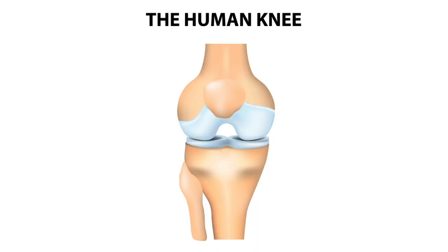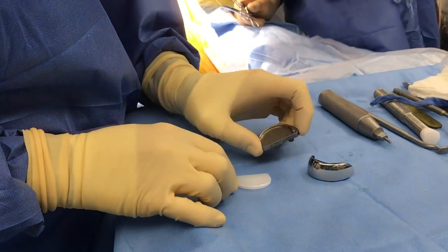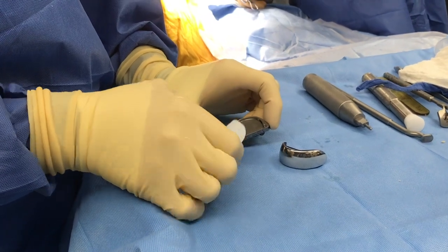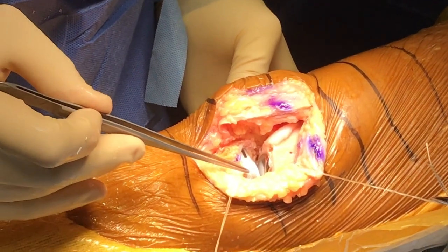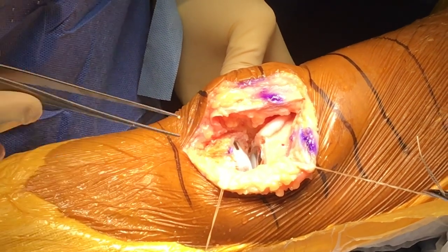For some people, arthritis will affect only one of the knee compartments — you might feel pain in one part of the knee. This calls for a partial knee replacement. About 6–8% of patients with knee arthritis meet the criteria for a partial knee replacement. Only the arthritic damaged compartment is resurfaced, through a relatively smaller incision, with less soft tissue damage and blood loss, resulting in shorter surgical times, less pain, and a quicker recovery.